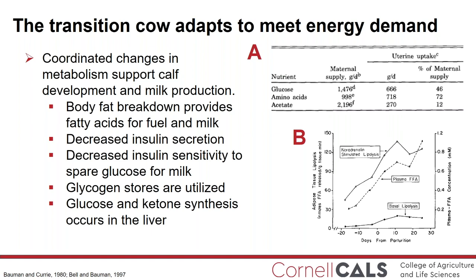Indeed, body fat breakdown increases circulating fatty acids. These fatty acids serve as key energy substrate molecules for oxidation, providing the cow with ATP. In addition, the fatty acids are utilized by the mammary gland to produce milk fat. In addition to fatty acids increasing during the transition period, there are dramatic reductions in circulating insulin concentrations that develop in these animals. In part, this explains why adipose tissue lipogenesis is suppressed and body fat breakdown is enhanced. The postpartum cow also experiences a reduction in sensitivity and responsiveness to insulin, which can contribute to body fat breakdown.